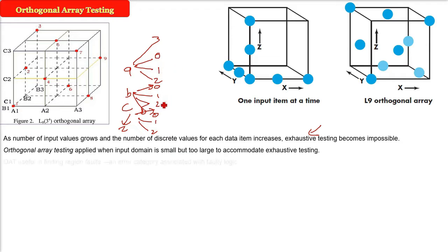Here we apply orthogonal array testing, which is applied when the input domain is small but too large to accommodate exhaustive testing. OAT is useful in finding region faults—that is, if A is 0, B is 1, and C is 2, then the problem is coming.